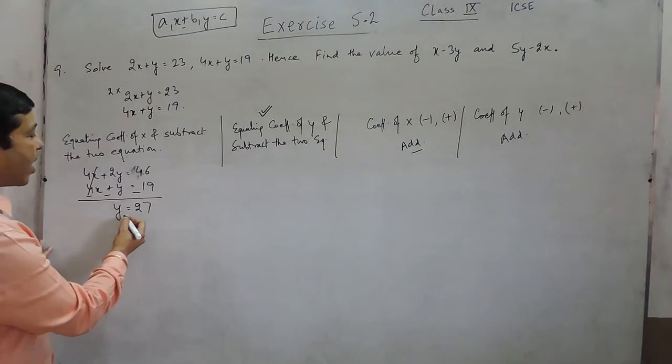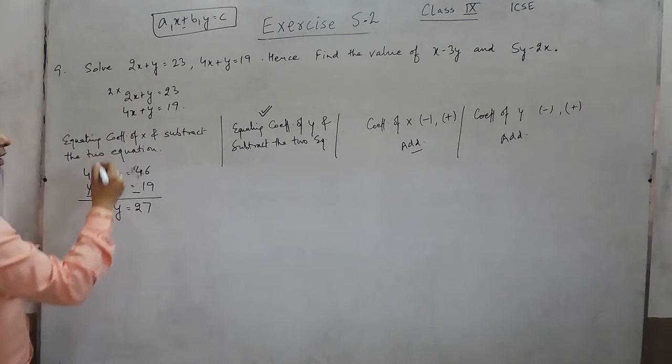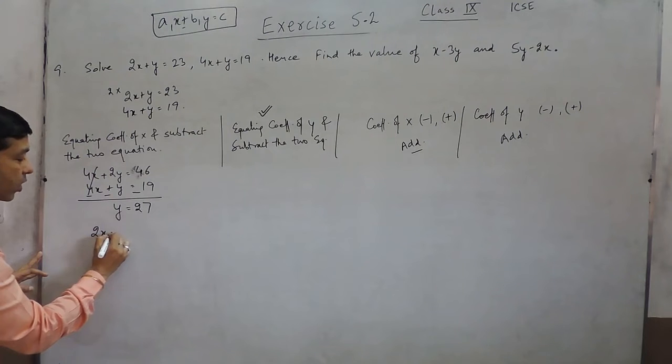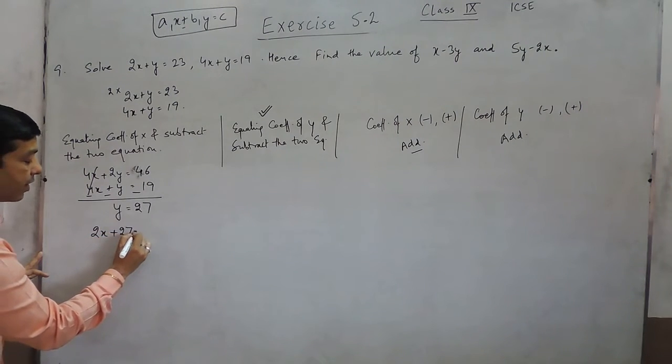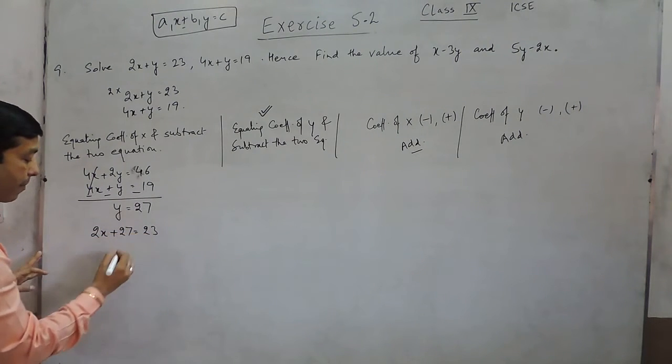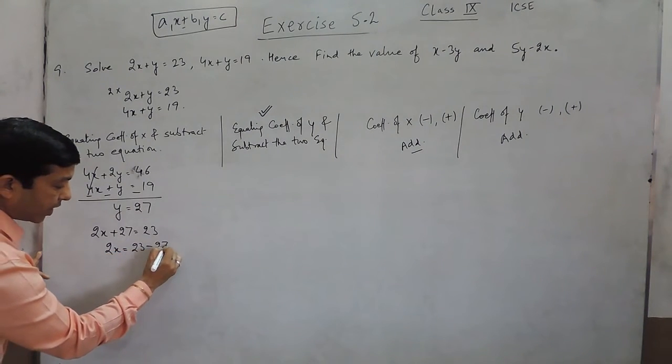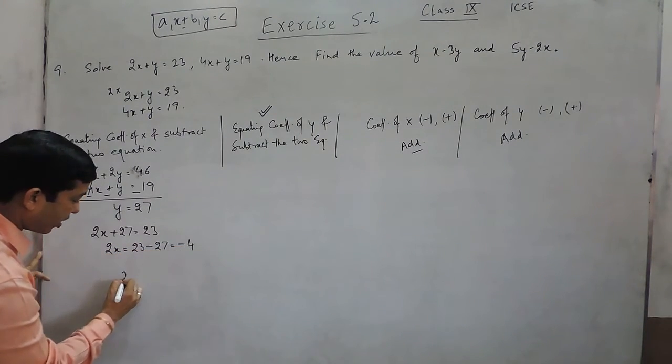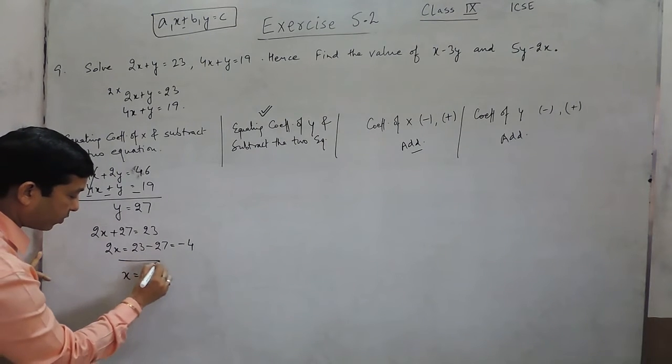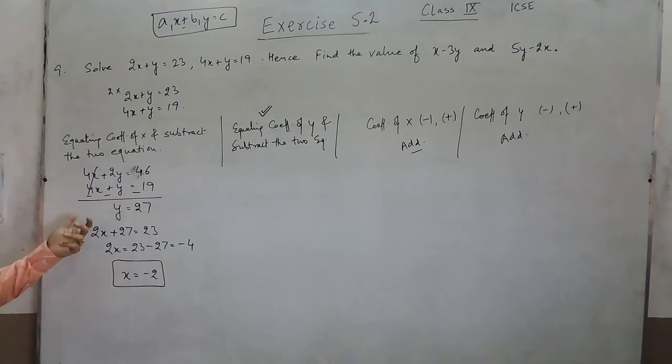And when I put the value of y as 27 in the first equation, it is 2x plus 27 equals 23. So 2x comes out to be 23 minus 27, that is minus 4, or the value of x becomes minus 2. Now what we have done in this case is we have equated the coefficient of x and then solved it.